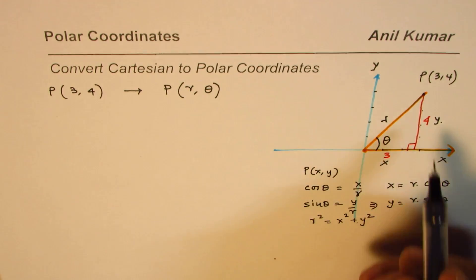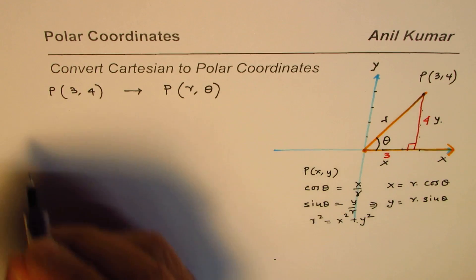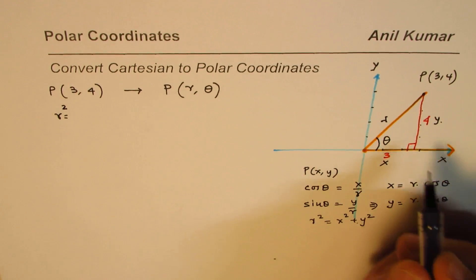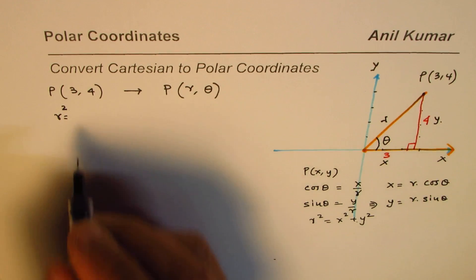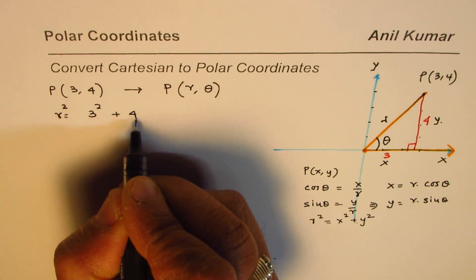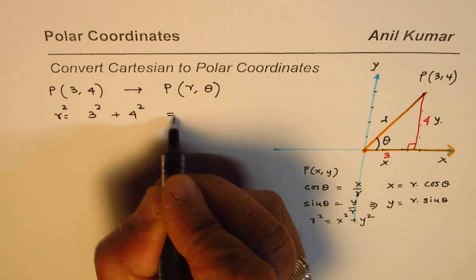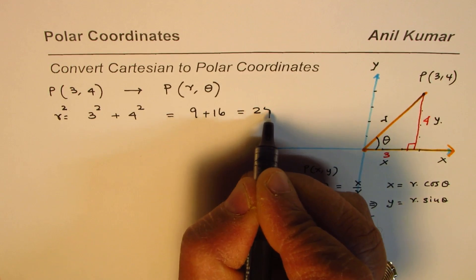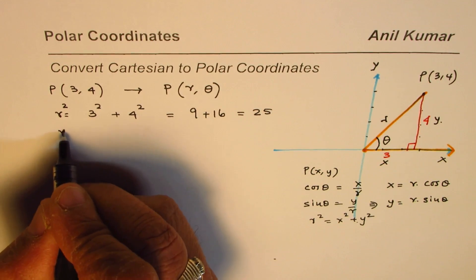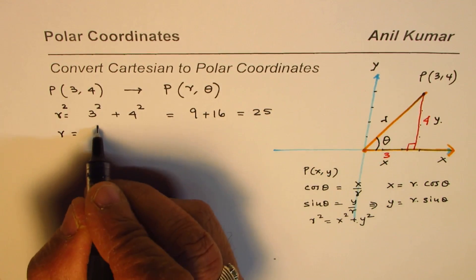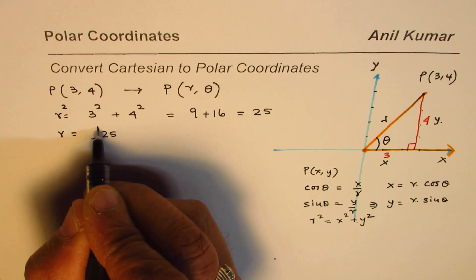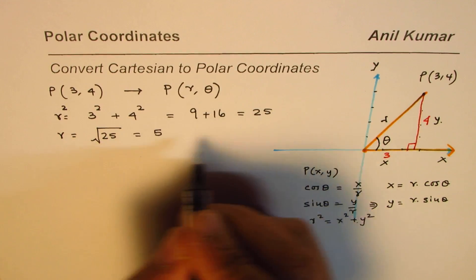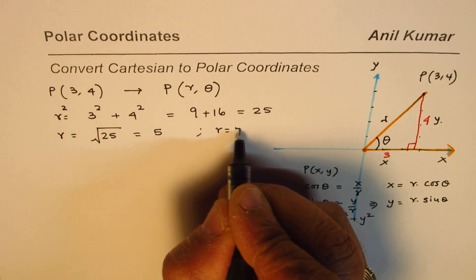So what is r equals to? So as you can see from this right triangle, r is equals to, rather let's start with r square, equals to 3 square plus 4 square. The x square plus y square. So which is 9 plus 16, which is 25. So I've taken a very simple example. So r should be square root of 25, which is equals to 5. So we know what r is. So we've got r equals to 5.